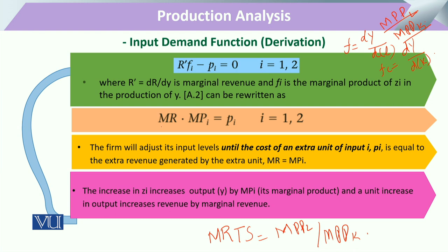We can rewrite r' as marginal revenue and fi as the marginal physical product. These two together will be equated, because pi represents the price of the output. Moving the input price term to the other side, the firm will adjust its input level — whether k1, k2 or l1, l2, or in this example z1 and z2.